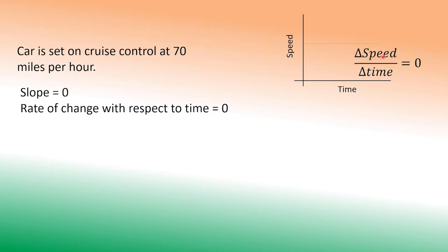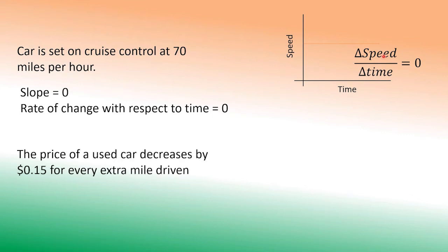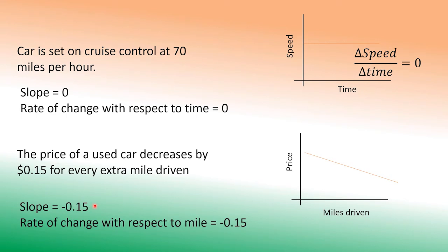Okay, let's look at this way. Now the price of a used car decreases by 15 cents for every extra mile driven, which means every mile you drive it goes down by 15 cents. So once again, slope is negative 15, which means rise over run is negative 15. Rate of change with respect to mile is minus 0.15. One extra mile, minus 0.15. And here we have change in price over change in miles. If you drive 10 miles, the price goes down by $1.50, which is again minus 0.15.